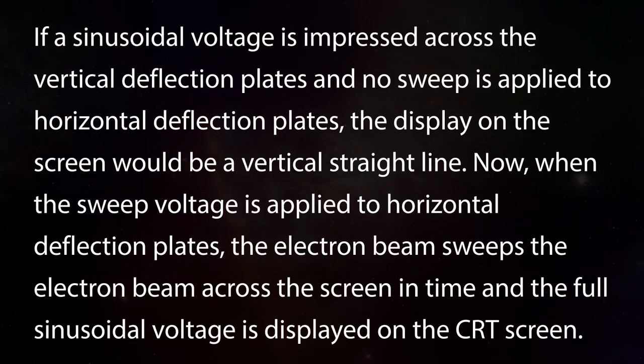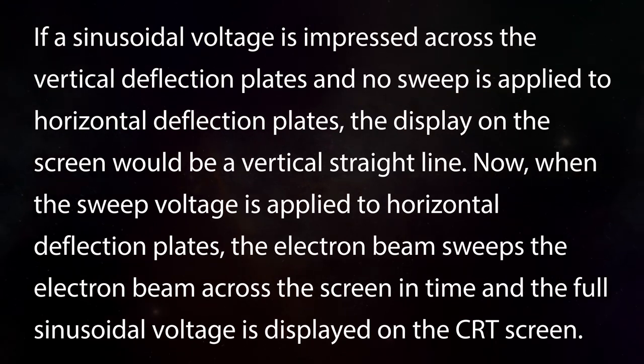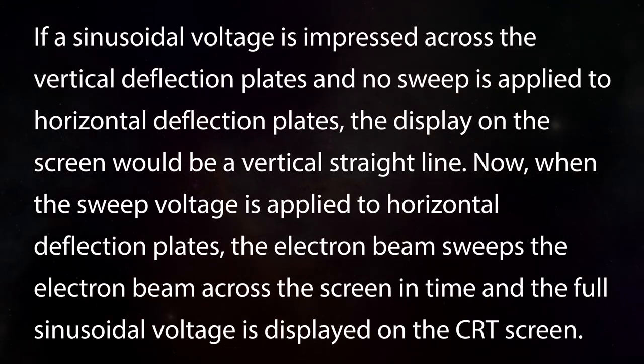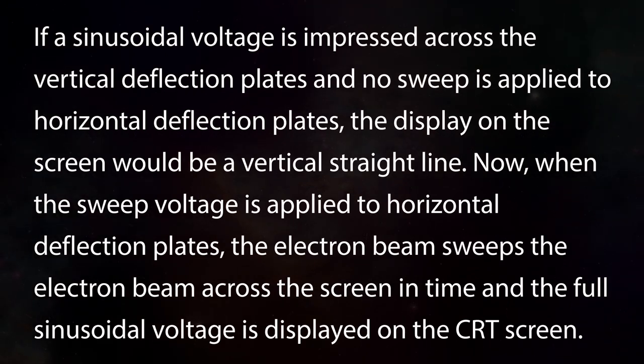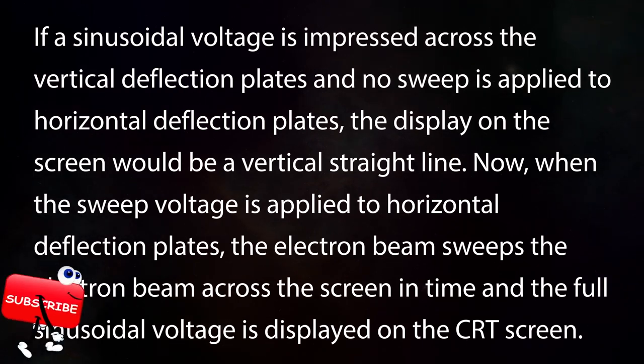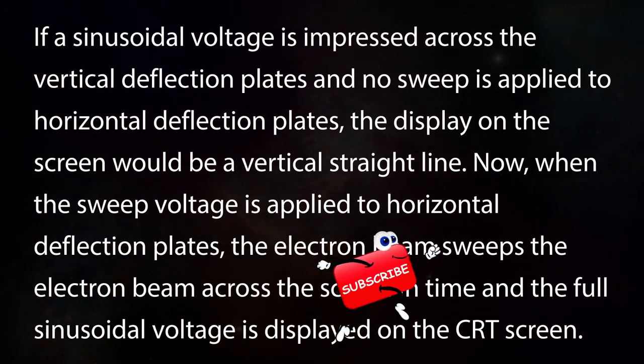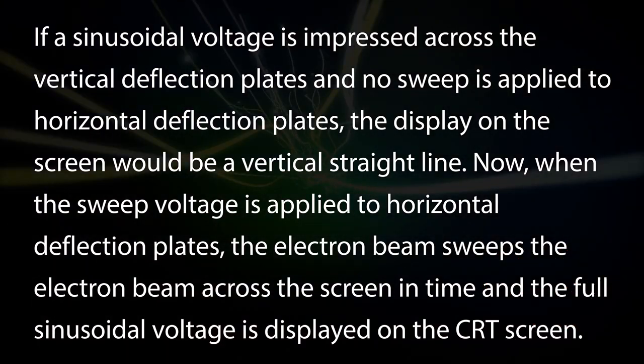If the sinusoidal voltage is impressed across the vertical deflection plates and no sweep is applied to horizontal deflection plates, the display on the screen would be a vertical straight line. Now, when the sweep voltage is applied to horizontal deflection plates, the electron beam sweeps across the screen in time and the full sinusoidal voltage is displayed on the CRT screen.